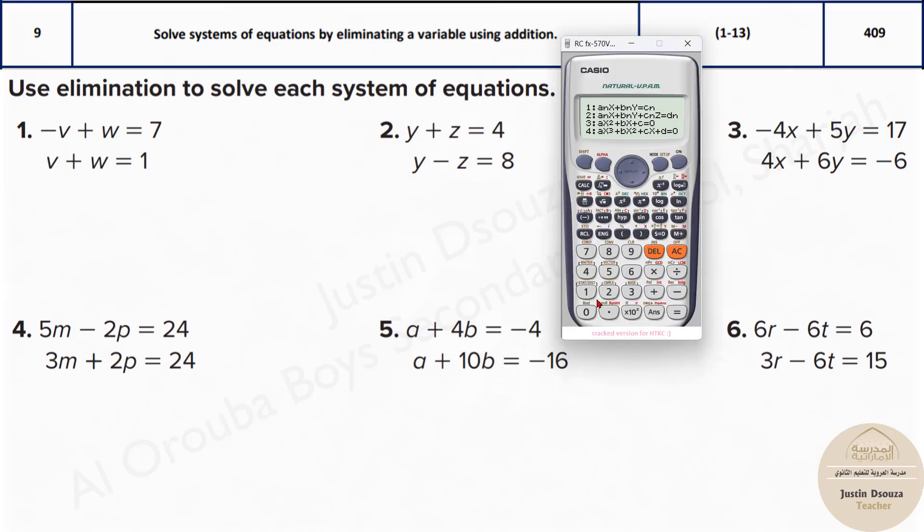You need to press mode 5 and 1. Let me choose the first question. All you need to do is put in the coefficients. Here there is no coefficient, it's just a minus sign, so that means it is minus 1. Because if there's no terms, it's just 1.